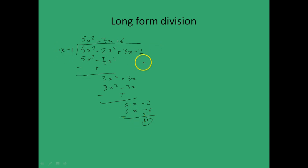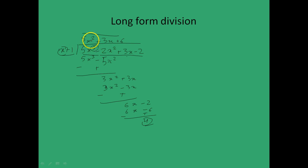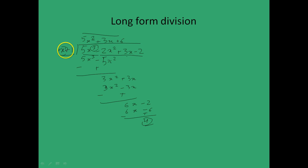So we get a remainder of 4 and this is where we stop. This is the polynomial we divided, this is the divisor, this is the quotient, and this is the remainder — that is long-form division. Note that we are dividing a third-order (cubic) polynomial by a linear polynomial whose power is 1, and we get a quotient of order 2, since 2 plus 1 equals 3. Also note that the remainder is of an order one less than the order of the divisor.